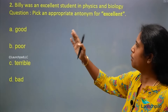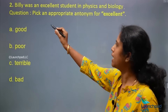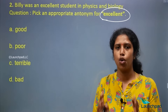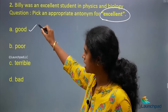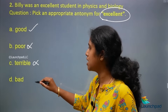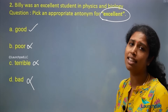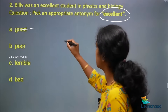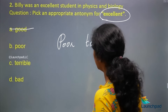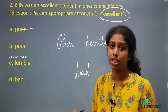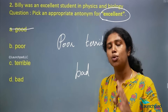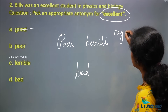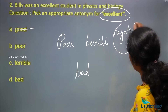The next question: 'Billy was an excellent student in physics and biology.' Pick an appropriate antonym for the word 'excellent.' The student is doing very well, so you have to find a word that is the opposite of excellent. The options are: good, terrible, poor, bad. Good means the same — it's not the opposite — so eliminate that. You are now left with three words: terrible, poor, and bad. All three give a negative tone, which makes it quite difficult to identify the right option.